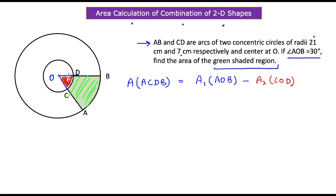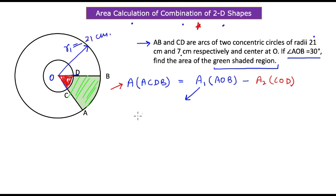Once you subtract A2 from A1 you get the required area, because the smaller red shaded region is common to both sectors. Subtracting it gives the required area. Now, A1 is the sector area from the circle with radius r1 = 21 centimeters. The sector area formula is π·r1² multiplied by θ/360, where 360 is the total angle of the circle.